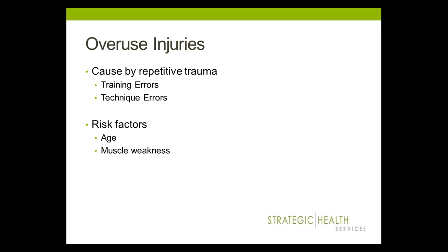Overuse injuries can stem from training errors or technique errors. Training errors occur when you take on too much physical activity too quickly — going too fast, too soon in your exercise program. Technique errors can also happen; if you use poor form when running, swinging a golf club, or throwing a baseball, you might overload certain muscles or joints. Not using proper equipment such as wearing properly fitting shoes, or doing too much of the same activity, are also causes. Risk factors include age and muscle weakness, and overuse injuries are more likely the older you get, especially if you don't recognize the impact of aging on your body.